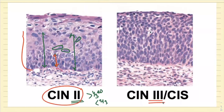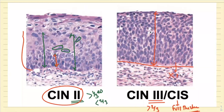Why are they called precursor lesions? What differentiates them from carcinoma? This is the basement membrane. There is no invasion. Till there is no invasion, they will be regarded as precursor lesions.